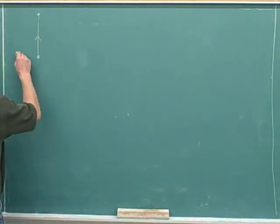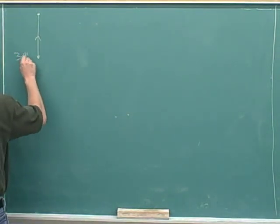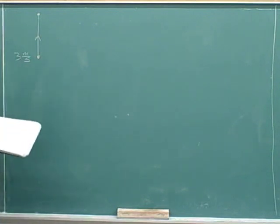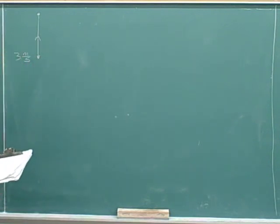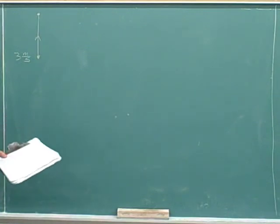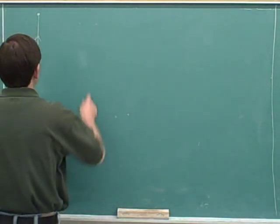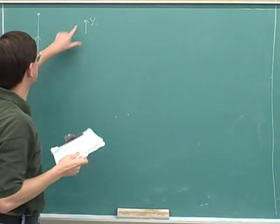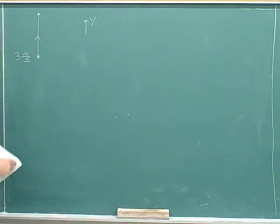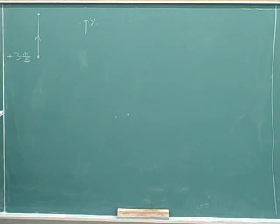The initial speed was three meters per second. We'd always like to indicate a sign. A speed does not have a sign, but it would be more useful to show the velocity with a sign. Let's choose a positive direction — it's usually best to choose the direction of motion. Since we're moving up, let's choose up as our positive direction, so the positive y-axis is up. Then the initial velocity was positive three meters per second.